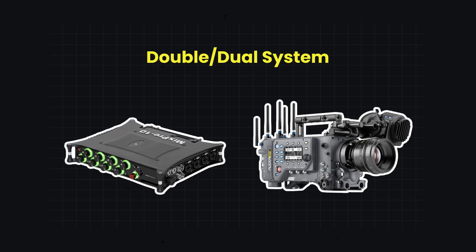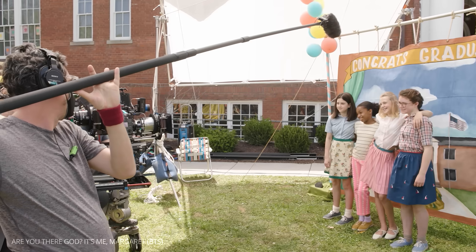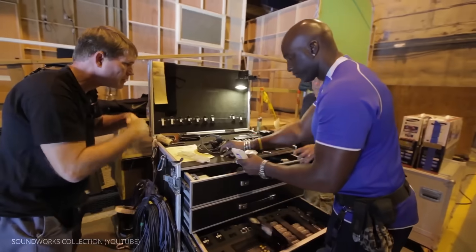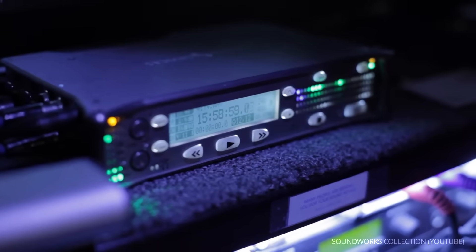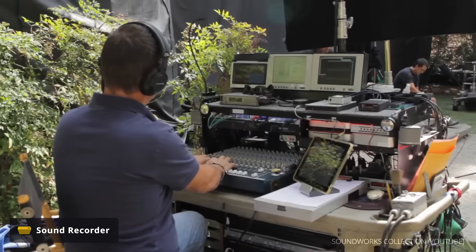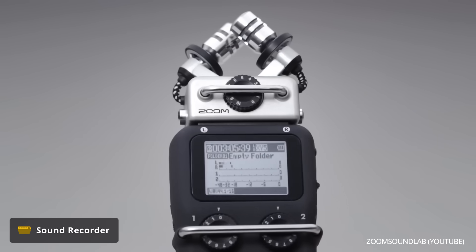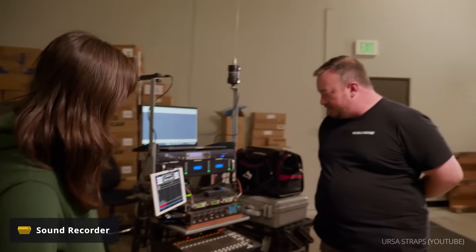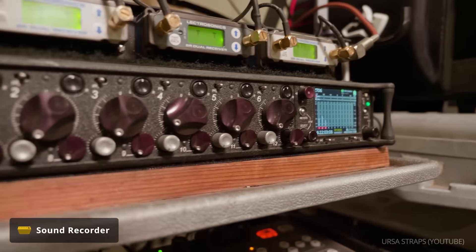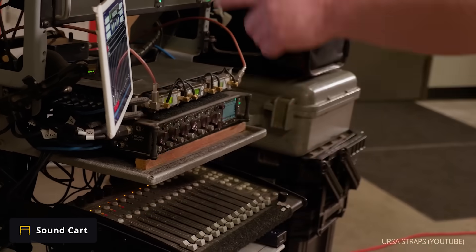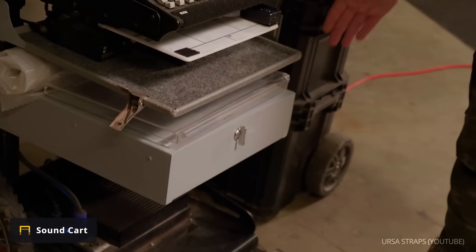The dual system typically allows for higher quality sound, since microphones can be placed closer to sources and the recorder can capture in higher fidelity. No matter the set, a dual system setup requires a recorder — a device that intakes the sound being captured by microphones, while also allowing for the mixer to control levels in real time. A recorder can be as simple as a Zoom H5, or as elaborate as sound mixer Tom Curley's Sound Devices 688 and CL12 system. These larger systems typically require a sound cart, which holds the various equipment a sound mixer needs while still being mobile.